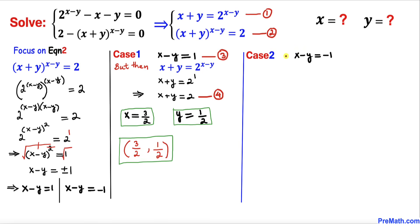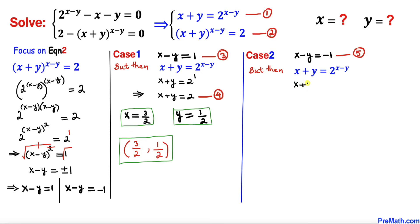Now let's focus on case two, where x − y = −1. Let me call this equation number five. From equation one, x + y = 2^(x−y). Replacing x − y with −1, this becomes x + y = 2^(−1). Since 2^(−1) = 1/2, we get x + y = 1/2. Let me call this equation number six.